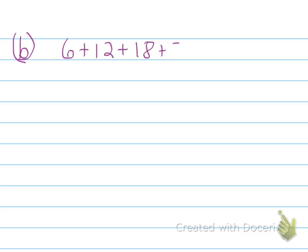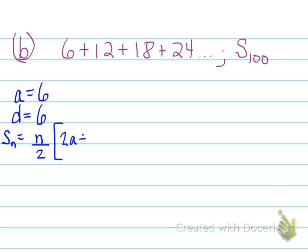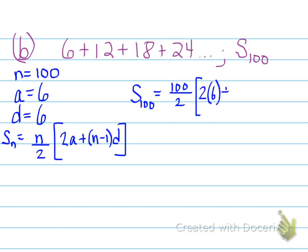6 plus 12 plus 18 plus 24 and so on, and you need to find the sum of the first 100 terms. Well, I'm pretty sure you're not going to write all 100 terms and try and find the sum of all of them. So you need to find out, is this an arithmetic sequence or is this geometric? Turns out that this is arithmetic. a is 6, the d value conveniently is also 6, and we need to find the sum of the first 100 terms. So we use the Sn formula for arithmetic series, and we plug in the values for a, d, and n. And it turns out that the sum of the first 100 terms is 30,300.